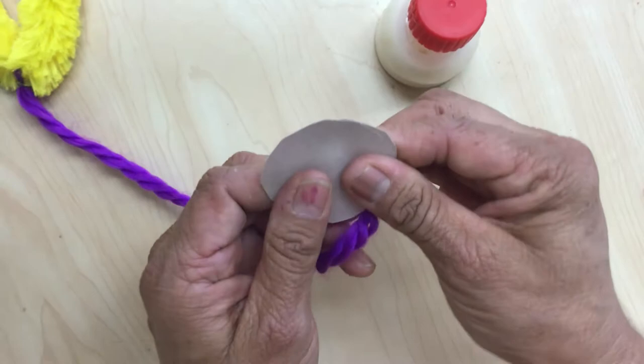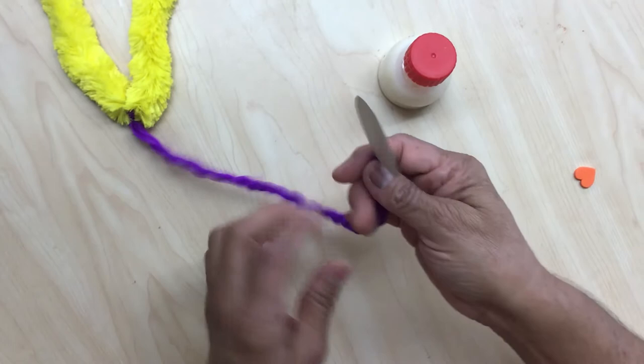Flip it over and make like a sandwich. Stick it together. Make it get stuck together. Go like this. A little circle sandwich.